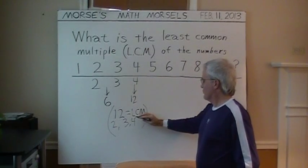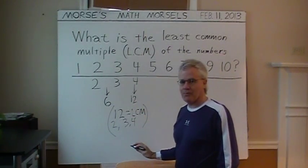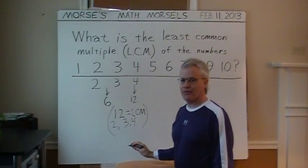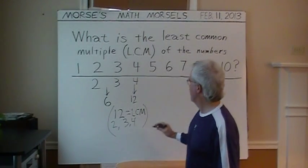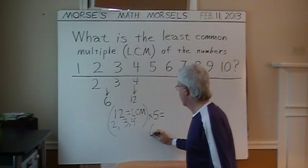How about 5? Well, 12 does not end in 0 or 5. And all multiples of 5 must end in one of those two digits, 0 or 5. So, we must multiply this 12 by 5, which will yield 60.